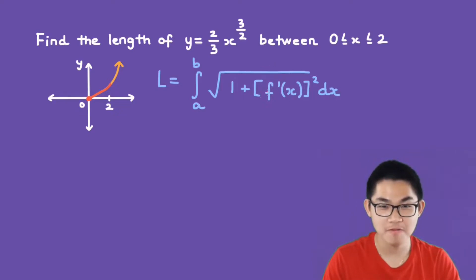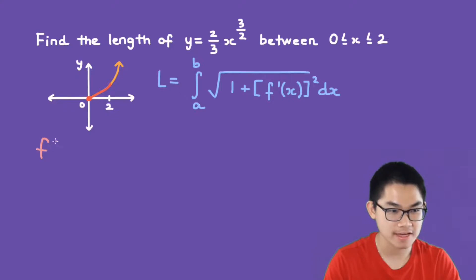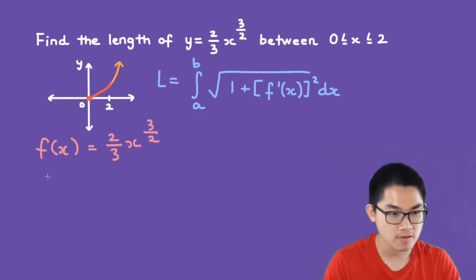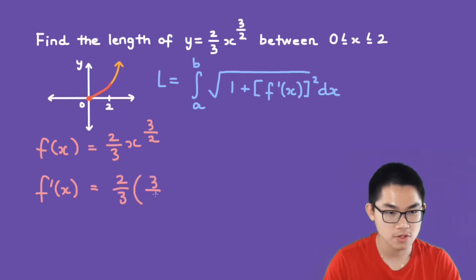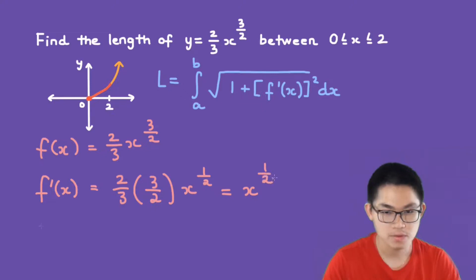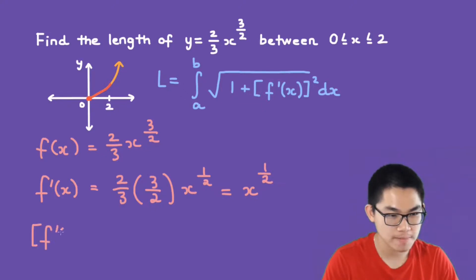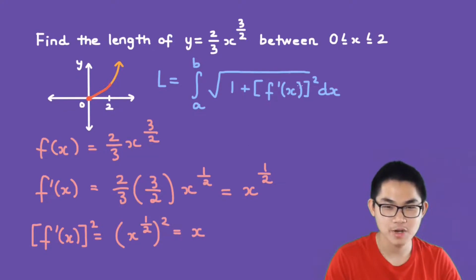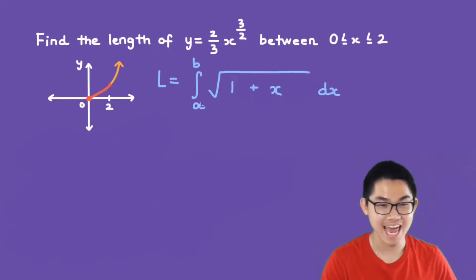We want to solve for f prime of x to the power of 2. So first of all, f of x is just 2 over 3 times x to the power of 3 over 2. Now we find the derivative: f prime of x equals 2 over 3 times 3 over 2 times x to the power of 1 over 2, which simplifies to x to the power of 1 over 2. So f prime of x to the power of 2 equals x to the power of 1 half squared, which is simply x. Now we replace f prime of x squared with x, and A is 0 and B is 2.